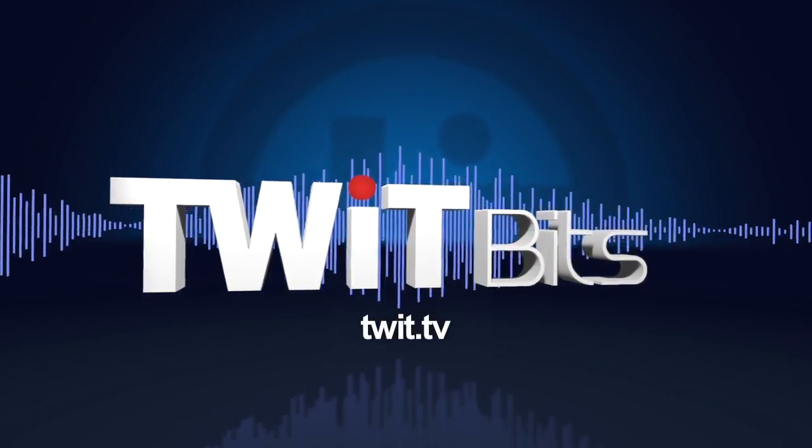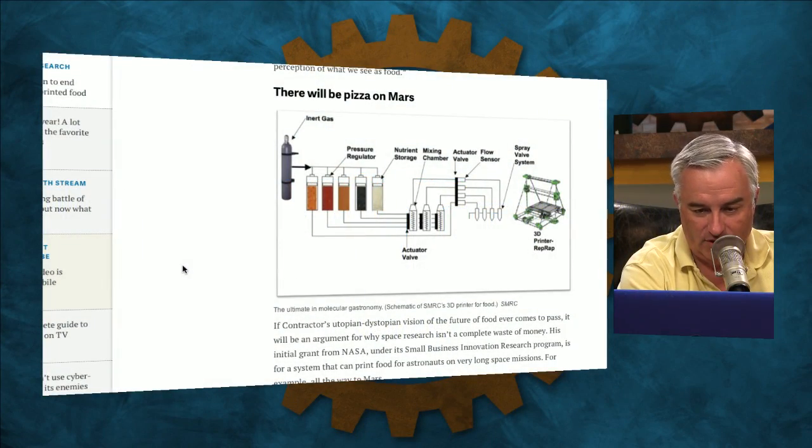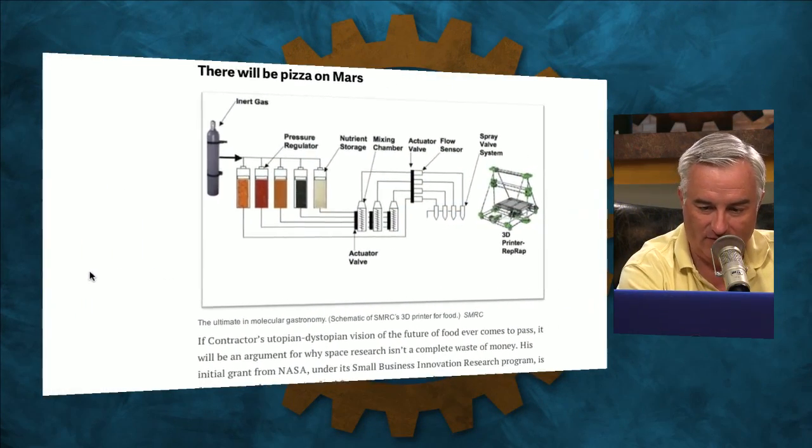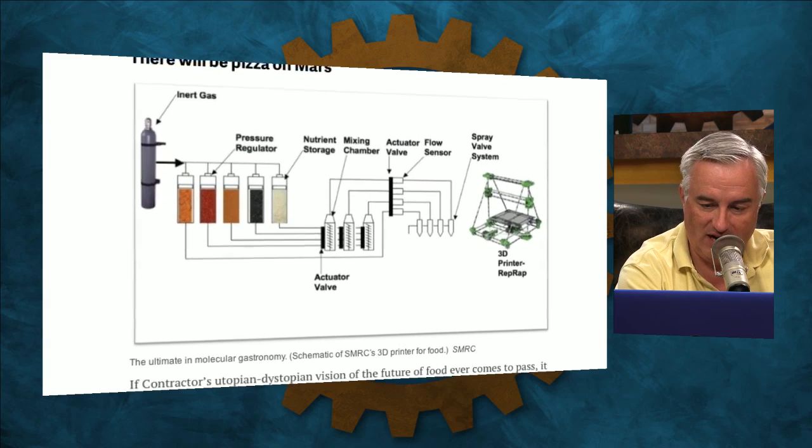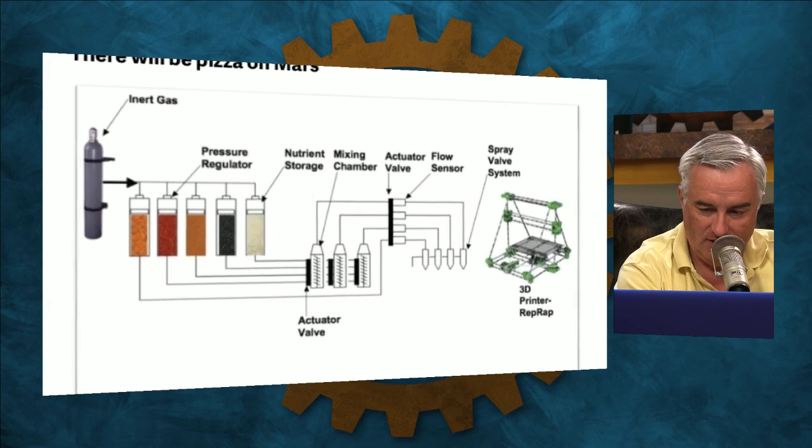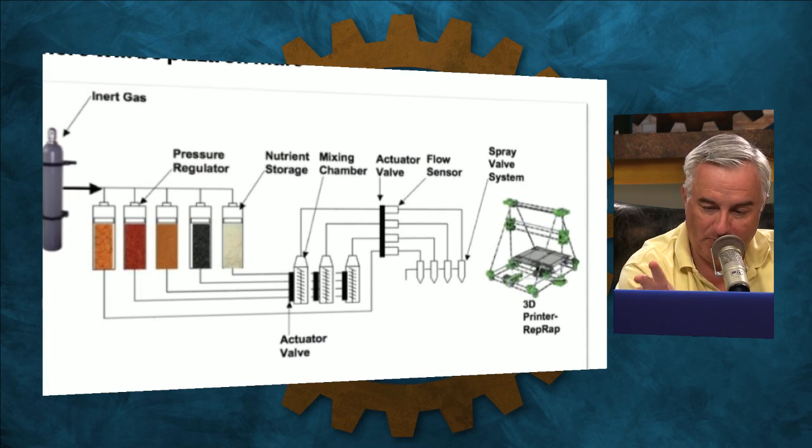Here's a slide. Inert gas, then a pressure regulator with a nutrient storage, the mixing chamber, the actuator valve goes through the flow sensor, the spray valve system, using a 3D printer rep-rap, just spits it right out.